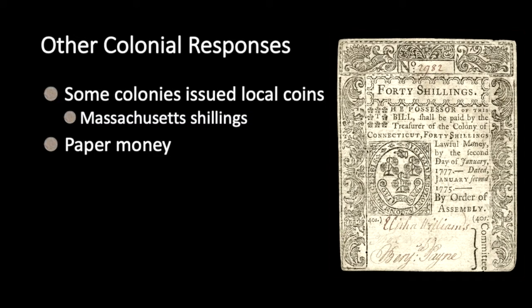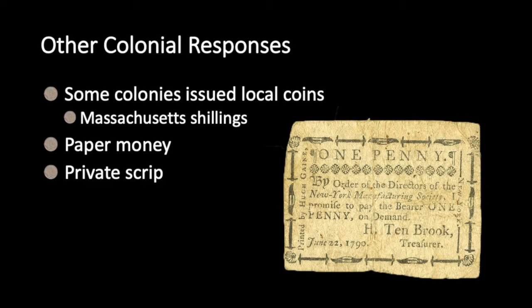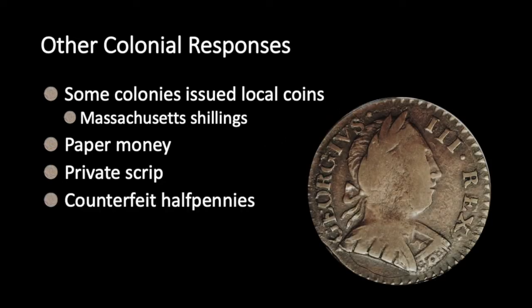Being legally prevented from issuing coinage, a lot of 18th century colonies resorted to issues of paper money — kind of like IOUs. For example, a Connecticut note promises to pay 40 shillings by January 2nd, 1777. These were never popular because of the substantial risk that they would not be redeemed, and consequently they tended to circulate only at a discount. By the 19th century, private businesses were issuing their own paper money called scrip, but paper scrip was a last resort — never popular because of the very real risk it would become worthless. Even counterfeits were preferable to most kinds of paper scrip.